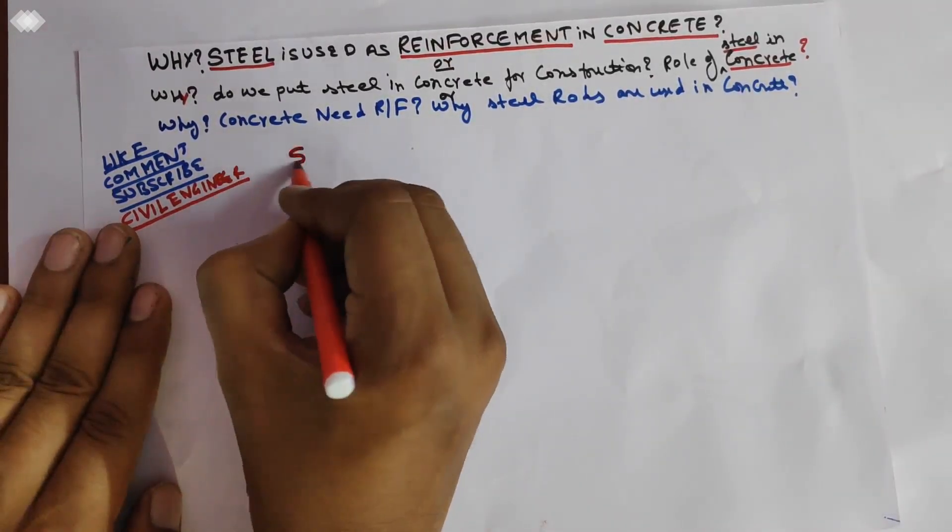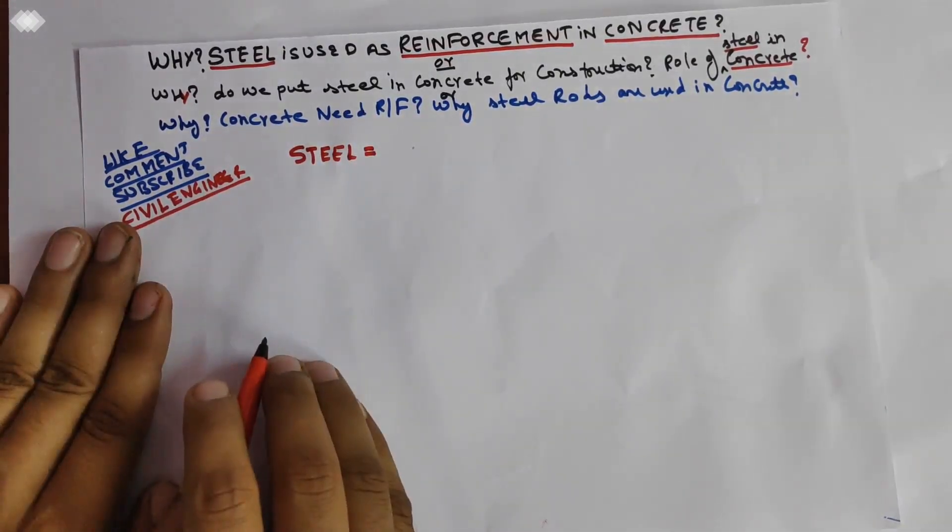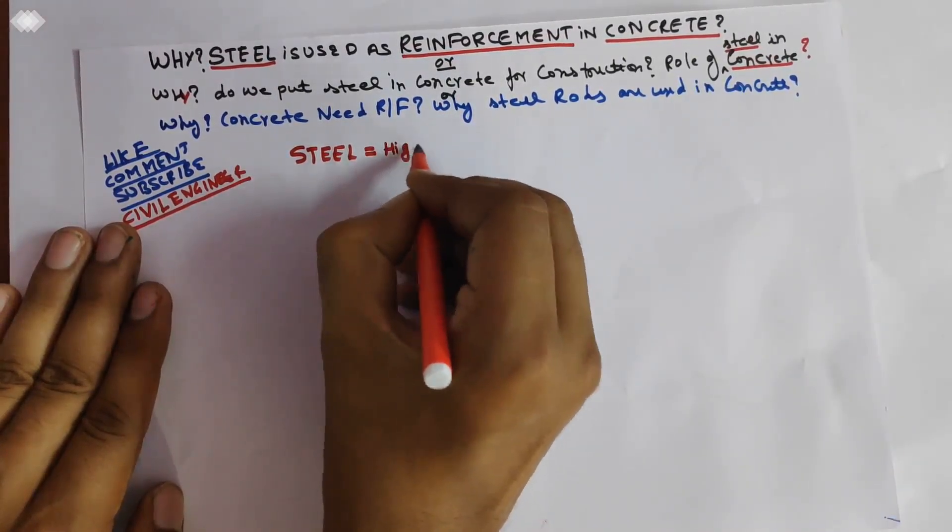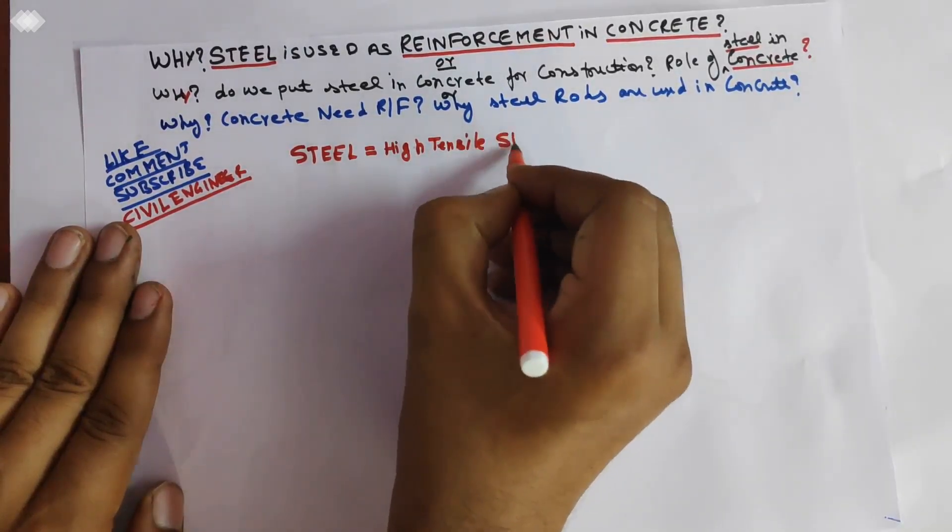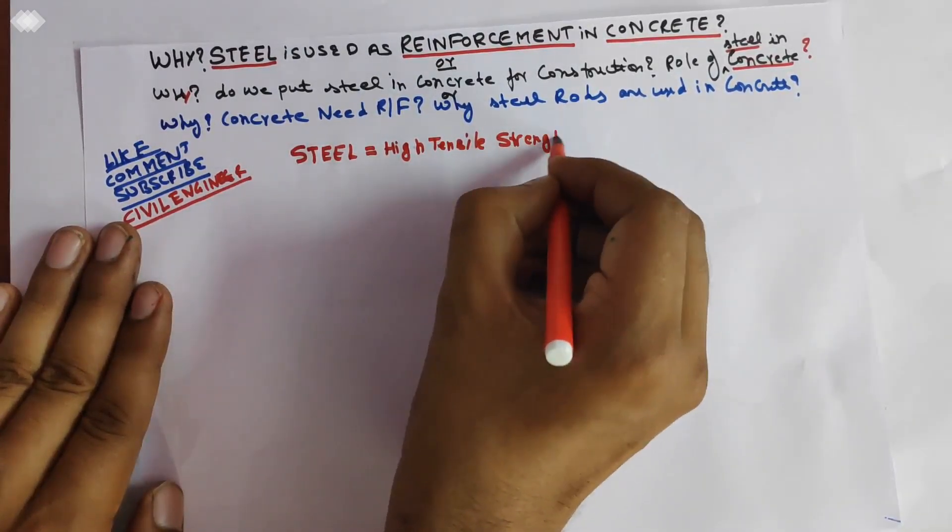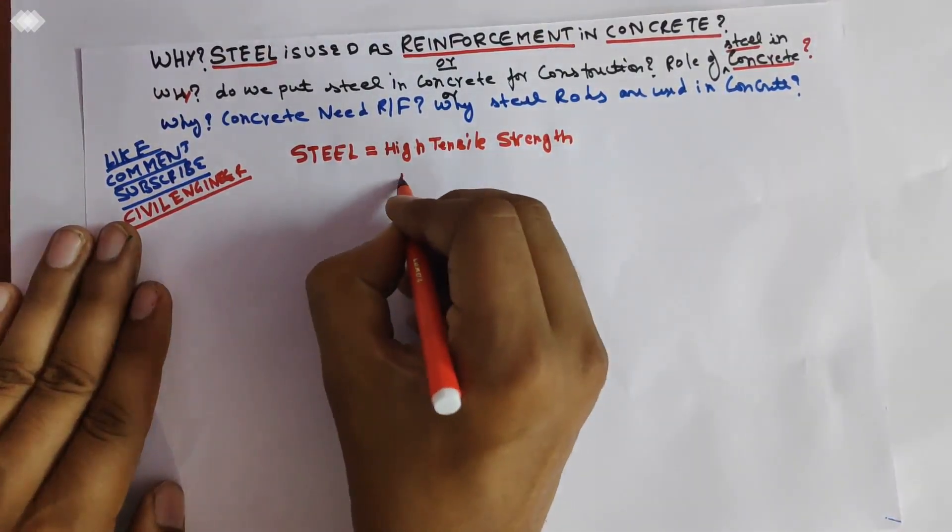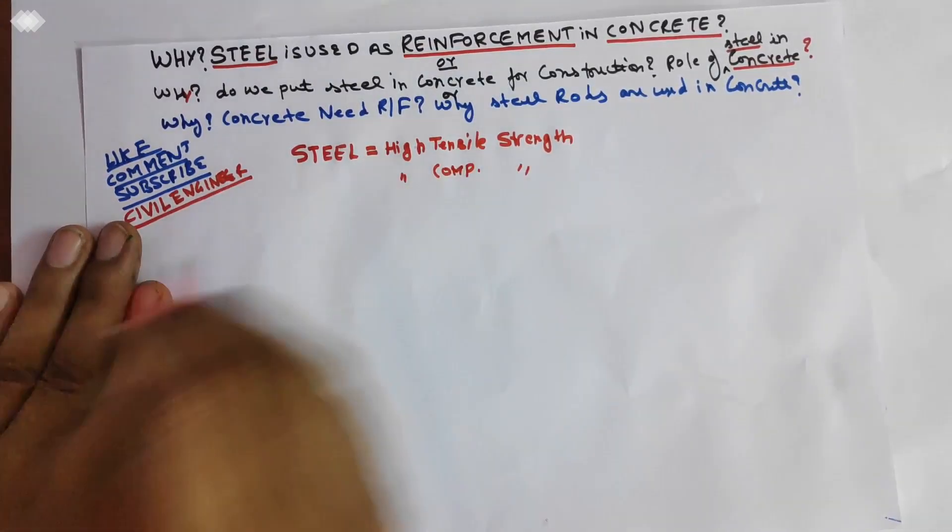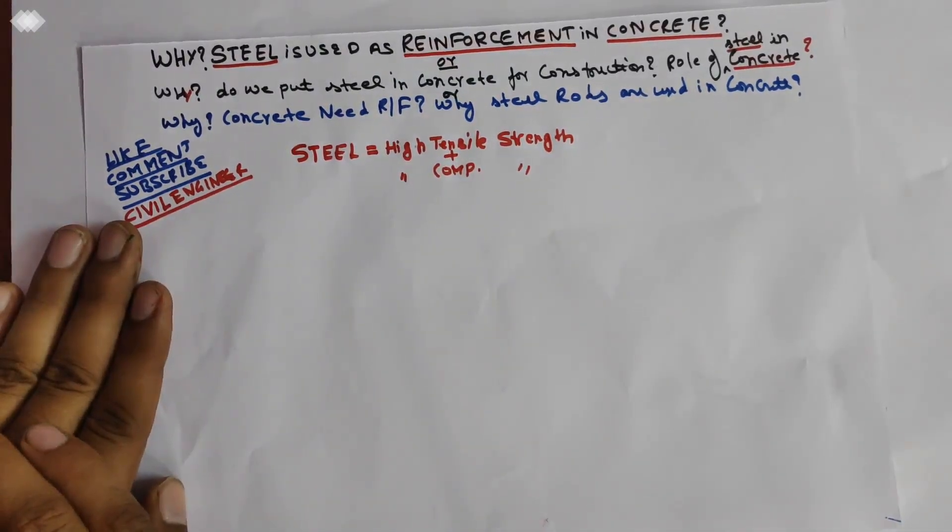Now I will talk about steel. What is steel? Steel has high tensile strength as well as compressive strength. So it is a mixture of high tensile strength and high compressive strength.